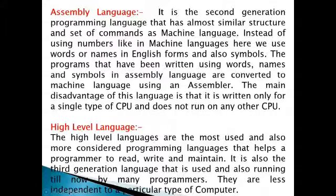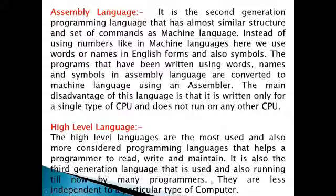After low level languages, high level languages come. High level languages are the most used and most considered programming languages. They help a programmer — a programmer is someone who makes programs — to read, write and maintain code. High level languages are 3rd generation languages, still used by many programmers today. They are less dependent on a particular type of computer because they can be understood by other CPUs as well; they are not dependent on one CPU and are considered machine-independent.